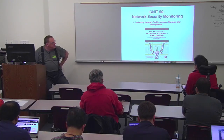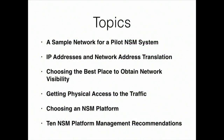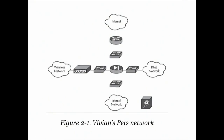Once you've got Security Onion running, you have to choose somewhere to deploy it. We'll talk about a simple network and all the places you might try to sniff traffic, and problems like network address translation, physical access, and issues about the network security management platform. Here's a sample network: you have an internal network for company employees only, with proprietary products and employee social security numbers — things you want to keep secret. You've got public servers like your web server and email server in the DMZ, separated from the private network.